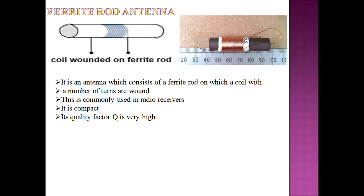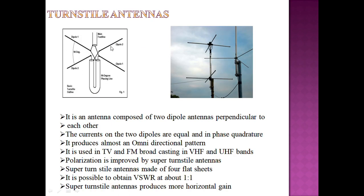The ferrite rod antenna consists of a ferrite rod with a copper wire coil wound around it. The number of turns are wound on the ferrite rod. It is commonly used in radio receivers. It is very compact and the quality factor Q is very high in the ferrite rod antenna.